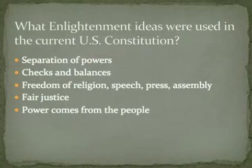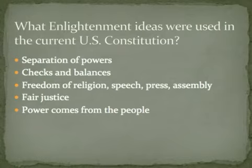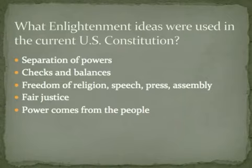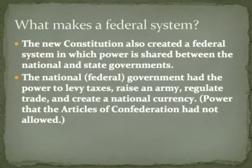The current U.S. Constitution was built on many Enlightenment ideas: separation of powers, checks and balances, freedom of religion, speech, press, and assembly, fair justice, and the principle that power comes from the people. Most of the Constitution is based on Enlightenment ideas. Thomas Jefferson spent time in France and talked with the philosophes about these freedoms, and Ben Franklin also traveled to Europe and met Enlightenment thinkers, bringing their ideas back.